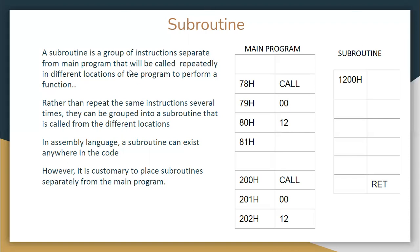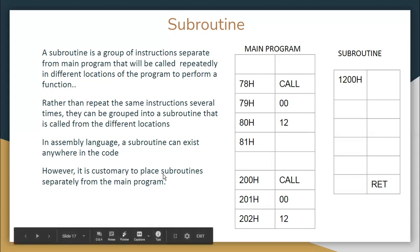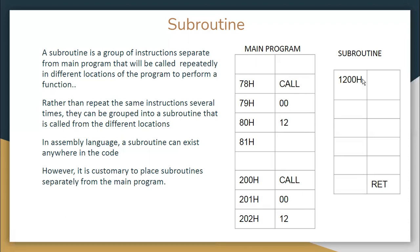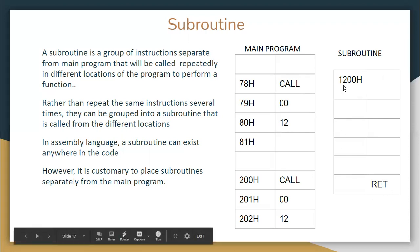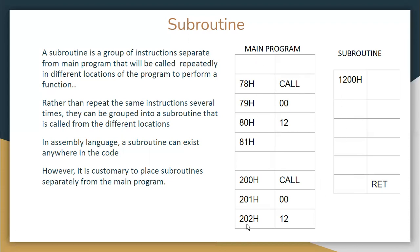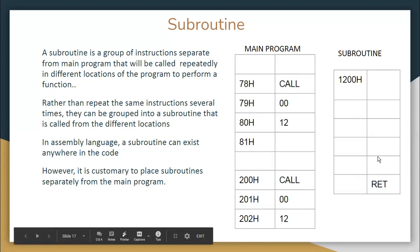A subroutine is a group of instructions separate from the main program — that is the main idea. The subroutine should not be kept within the main program; it should be separate, and from the main program you call the subroutine repeatedly in different locations to perform a function rather than repeat the same instructions several times. In assembly language, a subroutine can exist anywhere in the code, however it is customary to place subroutines separately from the main program.